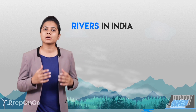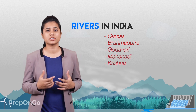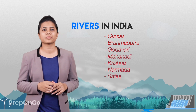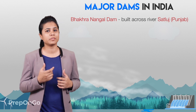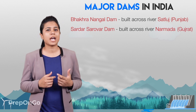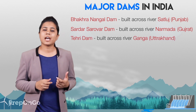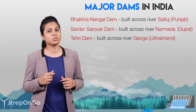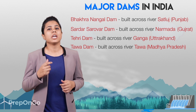India has many rivers; twelve among them have been classified as major ones — Ganga, Brahmaputra, Godavari, Mahanadi, Krishna, Narmada, and Satlaj. Many dams have been constructed across these rivers. The Bhakra Nagal Dam is built across the river Satlaj in Punjab. The Sardar Sarovar Dam is built across the river Narmada in Gujarat. The Tehri Dam is built across the river Ganga in Tehri, Uttarakhand. The Tawa Dam is built across the river Tawa in Hoshangabad.